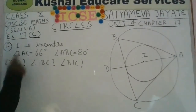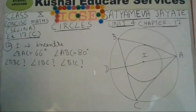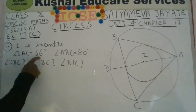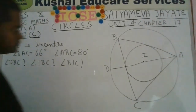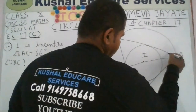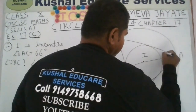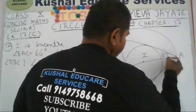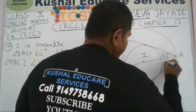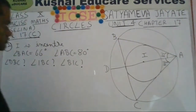Because I is the incenter, you must recall the property of the incenter. Angle BAC is 66 degrees, which means the line segment AI will be the angle bisector of the interior angle at A. So you can easily write that angles BAI and CAI will each be 33 degrees.